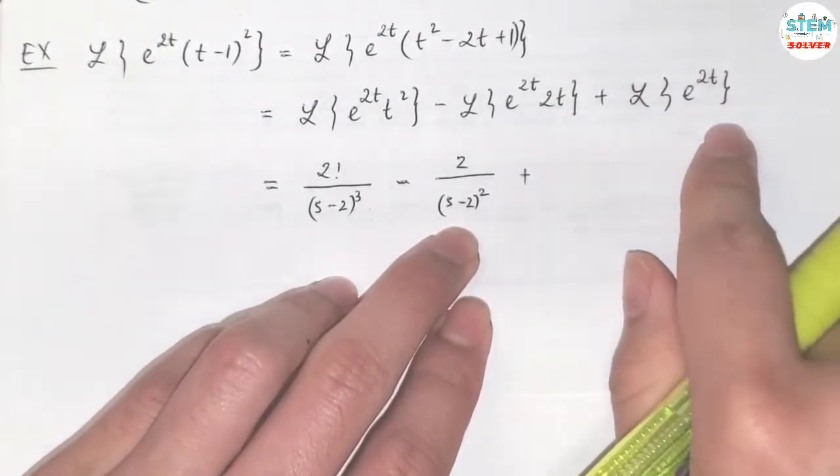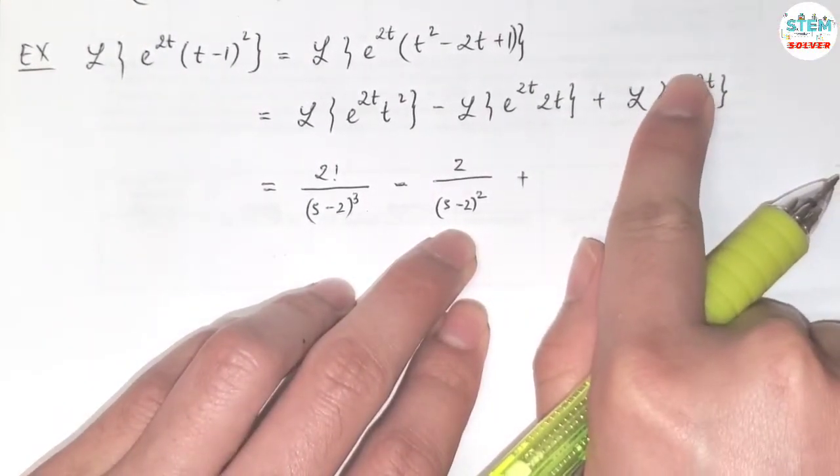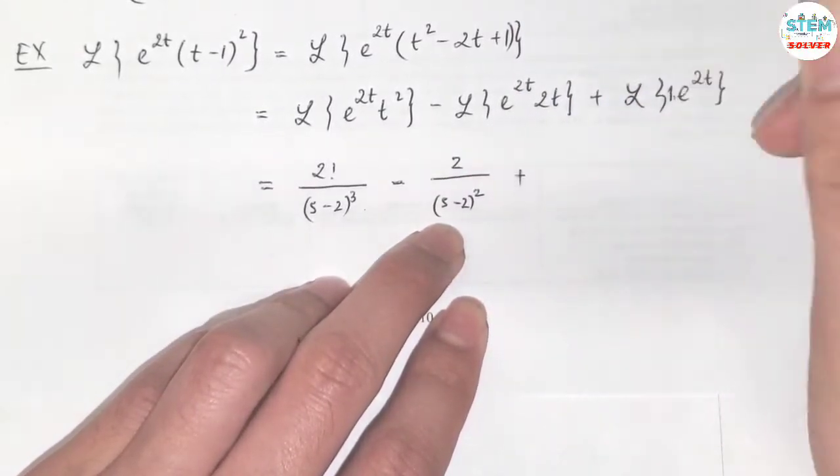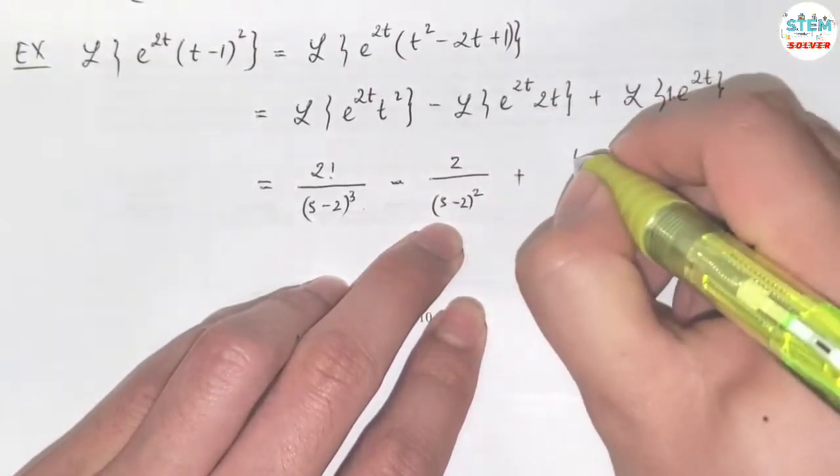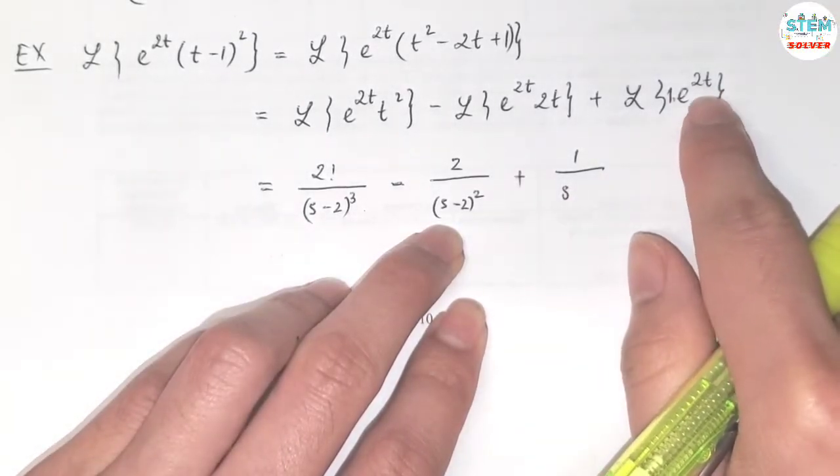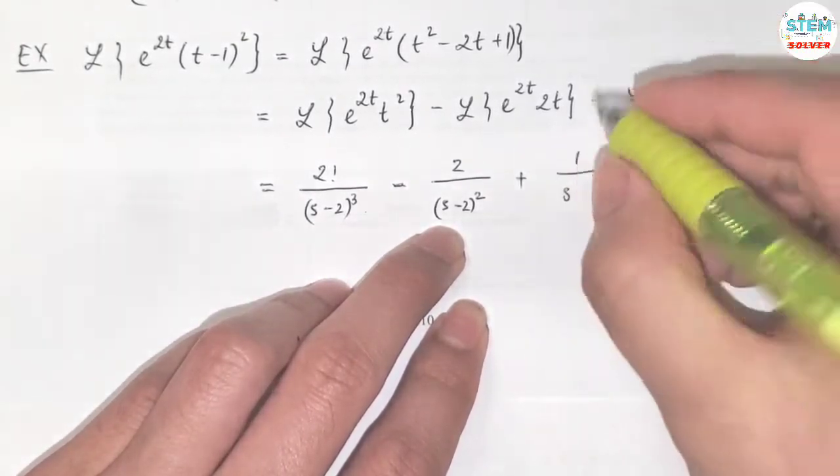Now for this one, ignore this, so that means you have nothing. So you multiply by 1, right? So the Laplace transform of 1 is 1 over s, right? But you have shift here, so shift to the right 2 units, so you have s minus 2.